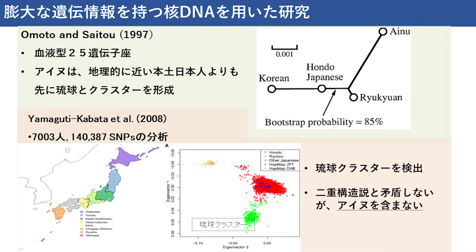核DNAを用いた研究でも、血液型25遺伝子座を用いた研究からアイヌと琉球が系統的にクラスターをするということが示されています。この結果は形態学的な研究に基づく二重構造説を支持することになります。また山口・川端エトワールによって2008年に行われたゲノムワイドSNPデータを用いた研究では、7003人のデータが入っており、主成分分析の結果、琉球クラスターが検出されています。